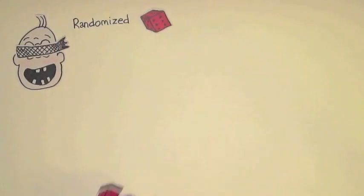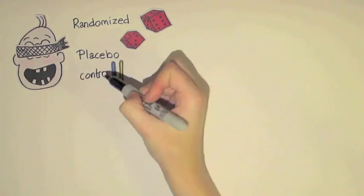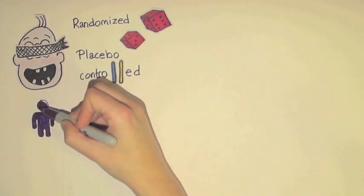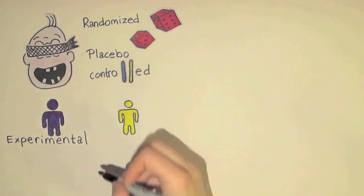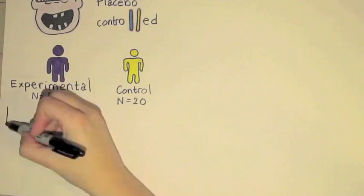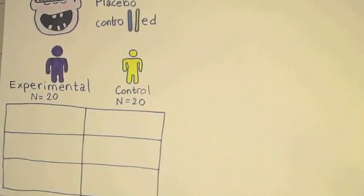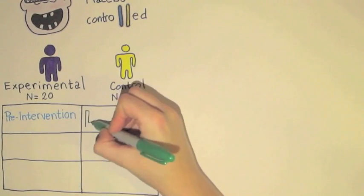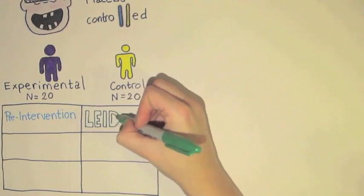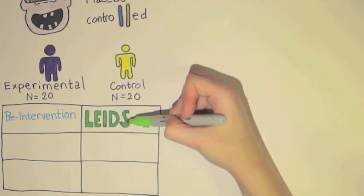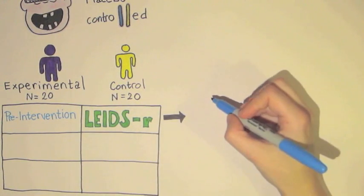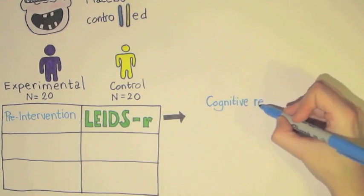In this triple-blind, randomized and placebo-controlled trial, 40 healthy individuals were randomly assigned to an experimental or control group, which resulted in 20 participants in each group. In the pre-intervention phase, all participants filled in the revised Leiden index of depression sensitivity, a validated questionnaire that assesses cognitive reactivity to sad mood.